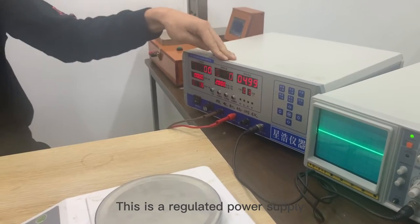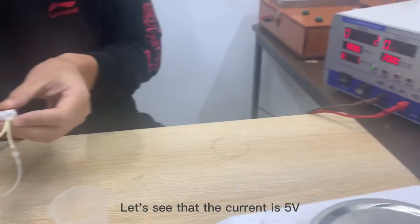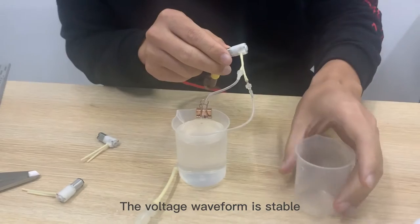Now start to test the parameters. This is a regulator power supply, this is an oscilloscope. Let's see that current is 5V 50 mA, the voltage waveform is stable.